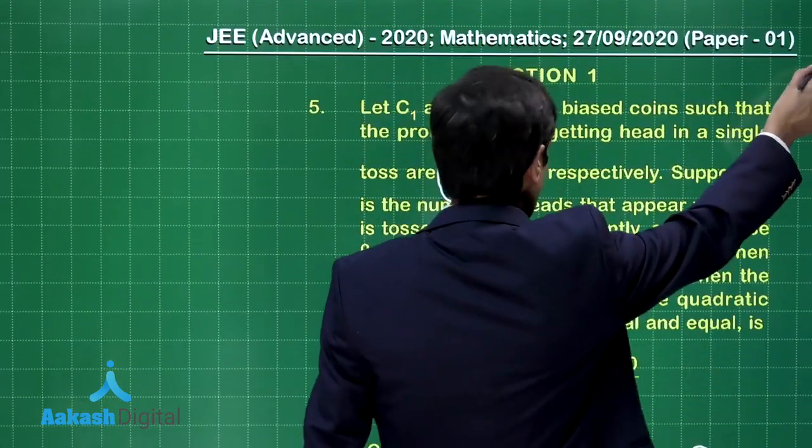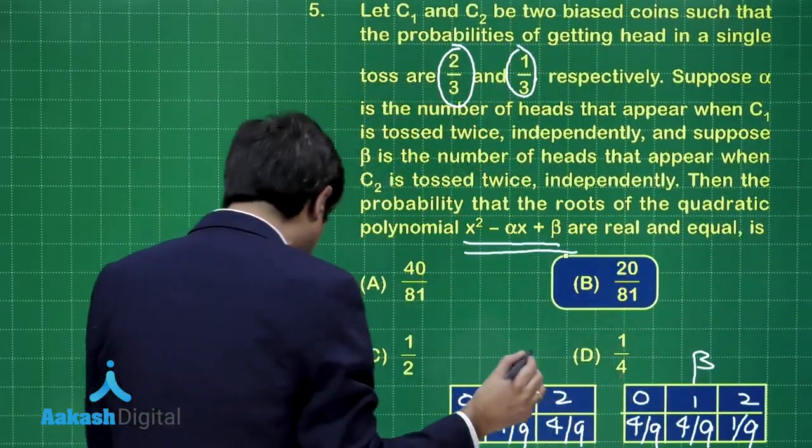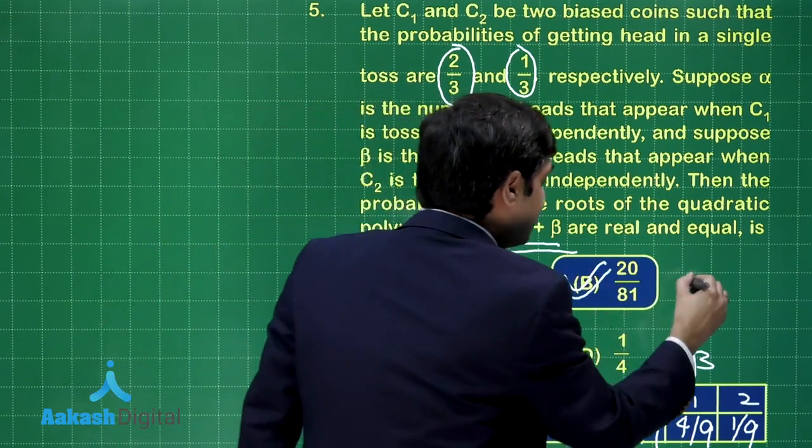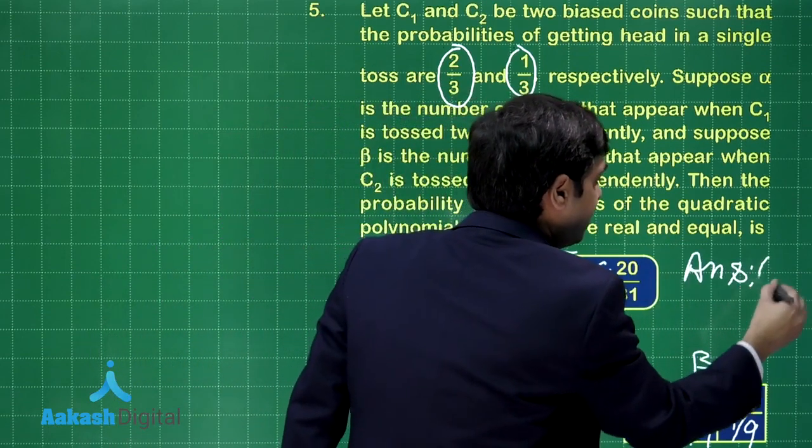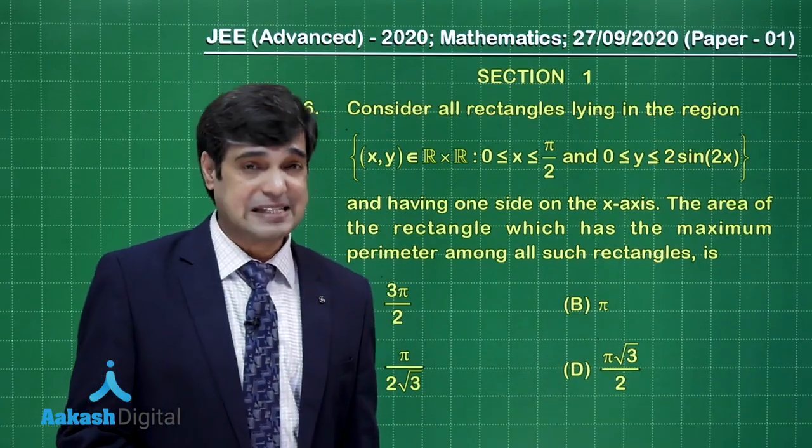Let us check out from the given options. 20 by 81 is given here as option number B. So yes, this is the required result. We have obtained the correct answer for this question of probability. I am sure this is clear. Let us take up the next one that is question number 6.